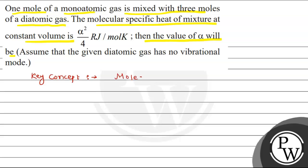So we will use the formula for molecular specific heat for mixture. We will calculate Cv equals to N1 Cv1 plus N2 Cv2 upon N1 plus N2.